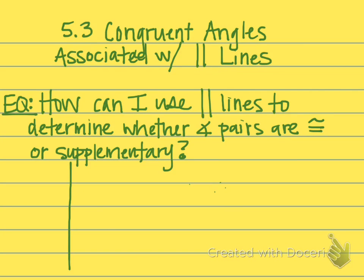These notes are over 5.3, which is congruent angles associated with parallel lines. Our essential question is: how can I use parallel lines to determine whether angle pairs are congruent or supplementary? Basically, this section takes the ideas from 5.2, which proved that lines were parallel, and instead of proving lines are parallel based on angles, now we are given parallel lines, and because they're parallel, we can say these angles are congruent or these angles are supplementary.